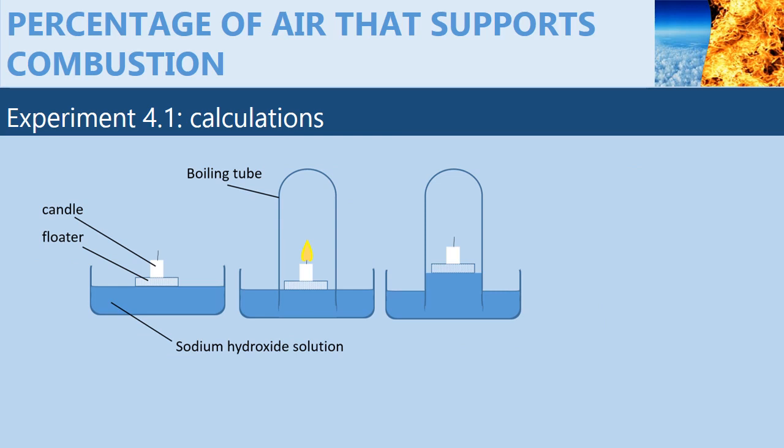Since the water in the boiling tube has risen to a certain level, it is possible for us to estimate the percentage of air that was used up in the burning of the candle. What we need to do is measure the level of water before and after the experiment. Suppose the level of water before the experiment is p centimeters and after is q centimeters. The expression for the calculation of the percentage of air is given as follows: (p - q) / p × 100 equals the percentage of oxygen in air.